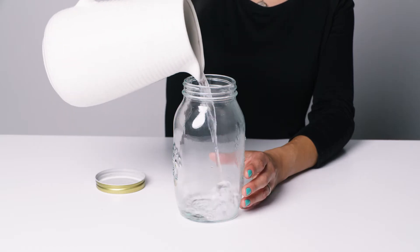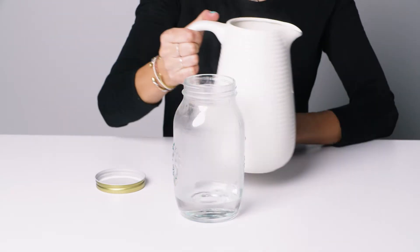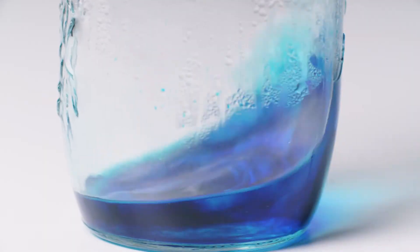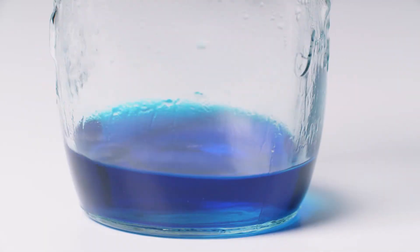Have an adult pour a little bit of the hot water into the jar and gently swirl it to warm the sides. Add some blue food coloring to the water and gently swirl it until the water is completely blue.